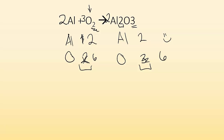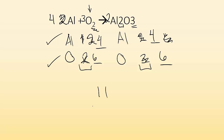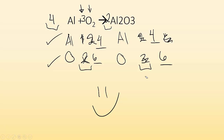But I've also changed the aluminum — I now have four aluminum from the two Al2O3. So I need to change the reactant side aluminum from two to four. Now I've got four aluminums on the left, four on the right — good. Six oxygens on the left, six on the right — good. I check to see if I can simplify: I've got four, three, and two. Three is a prime number, so I definitely can't simplify because not all are multiples of three. I'm done.